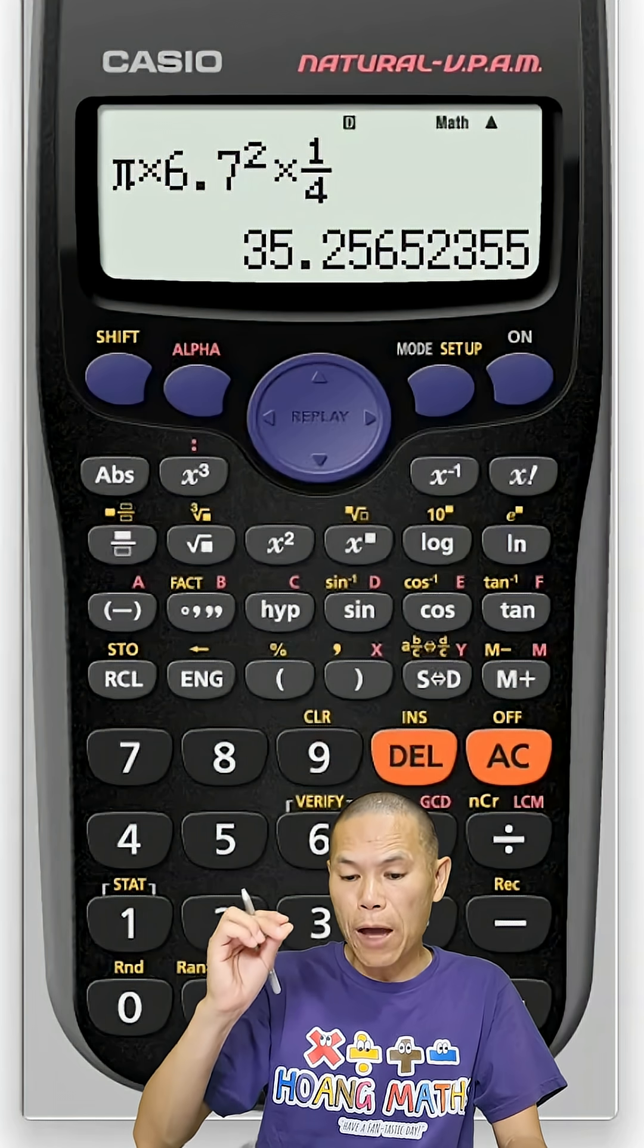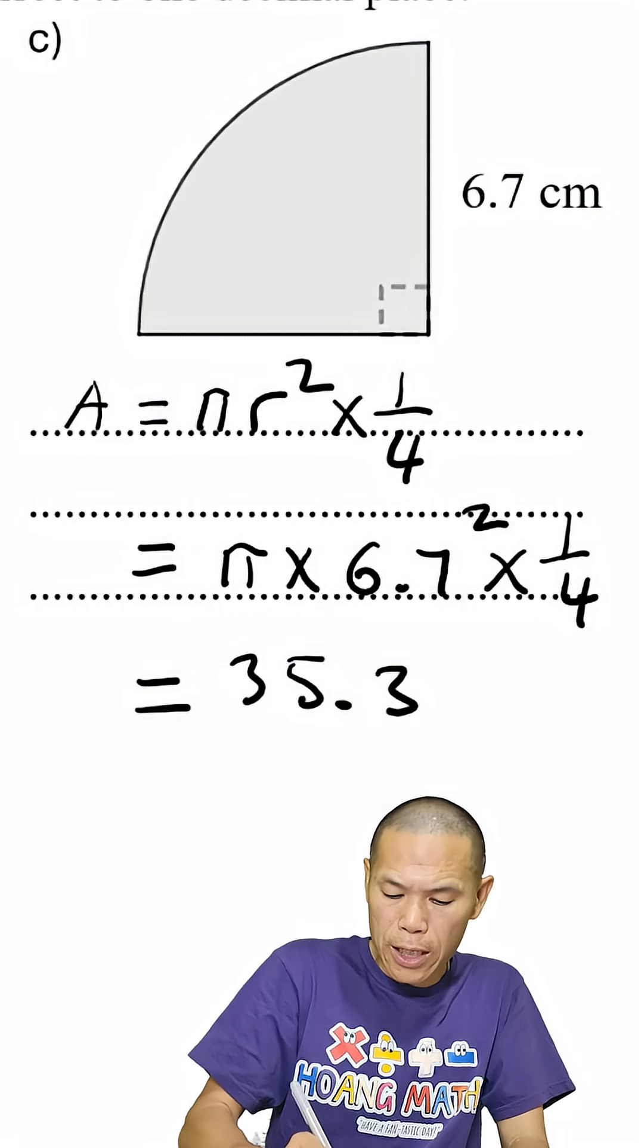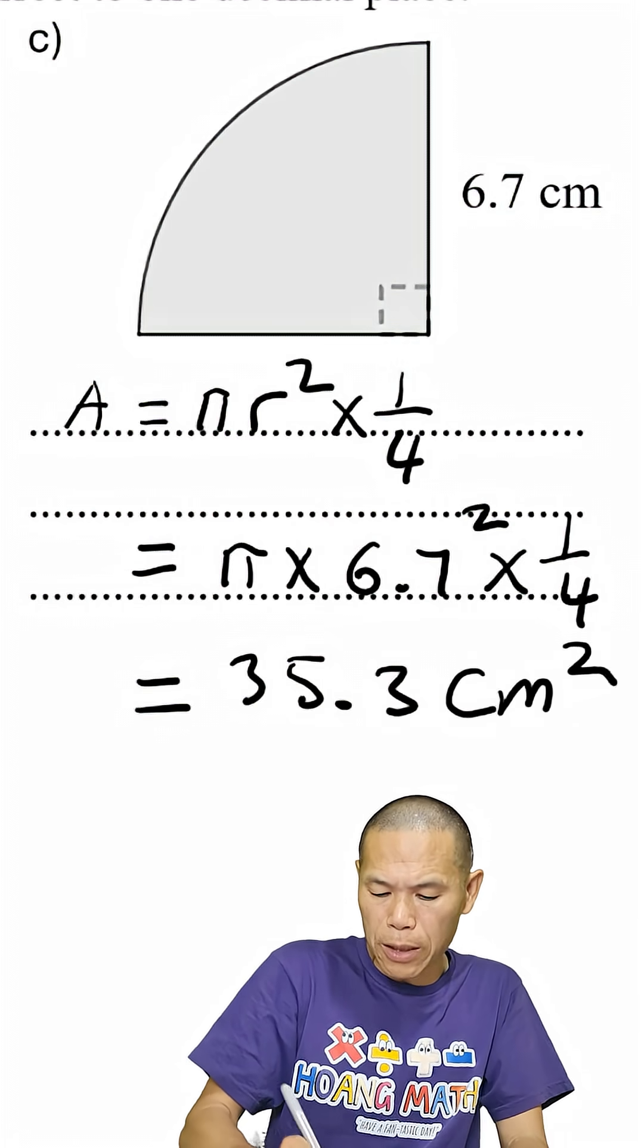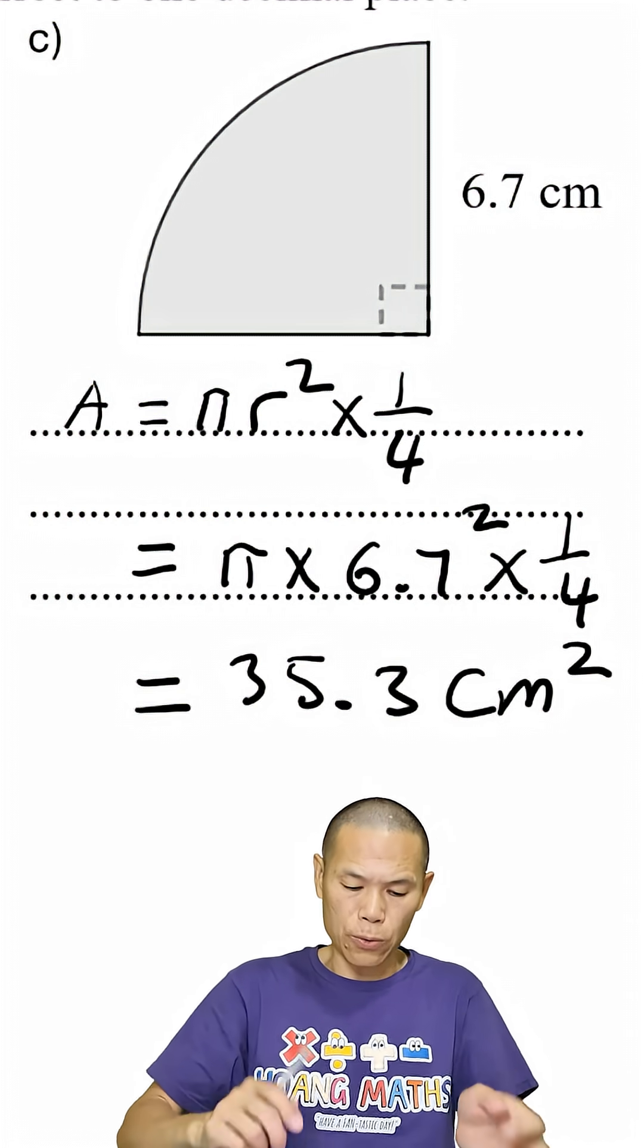35.3. So 35.3 square centimeters. That is the area of this quarter of circle.